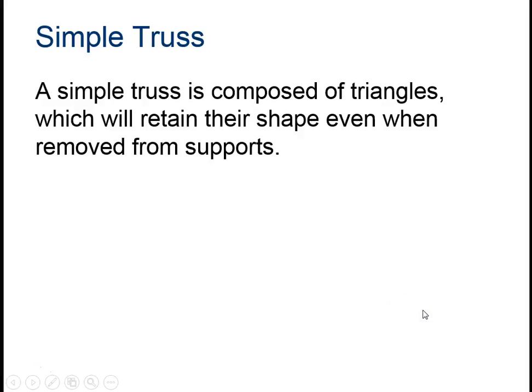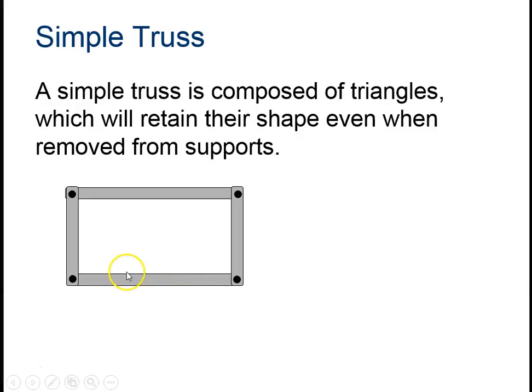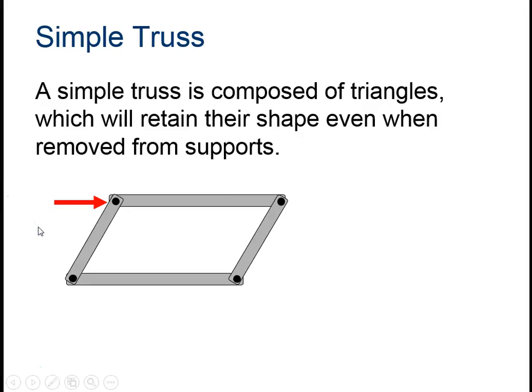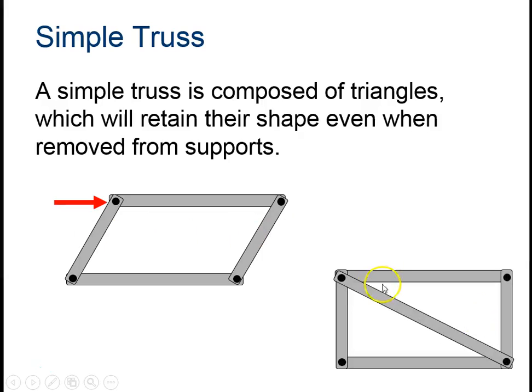A simple truss is composed of triangles. The bonus of triangles is this: if I start with this rectangular shape and push right here, what's going to happen? Well, it's going to push over like this. We call that racking. However, if I put in one cross member like this, even if I pushed here, this member is going to keep it from bending. It greatly improves the strength of this design without adding a lot of weight.